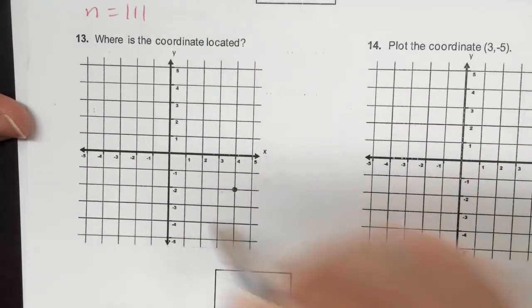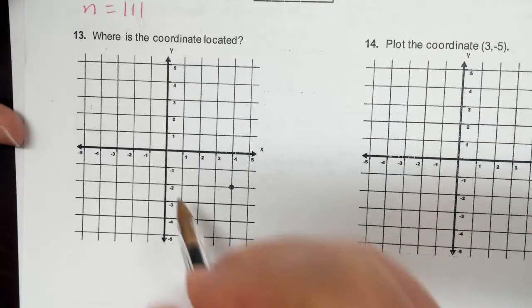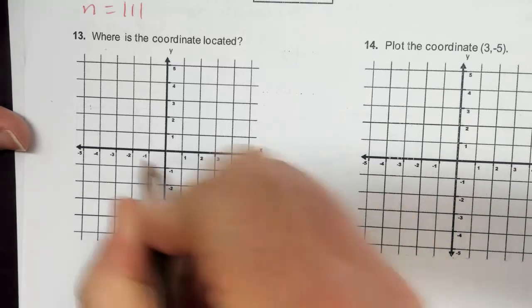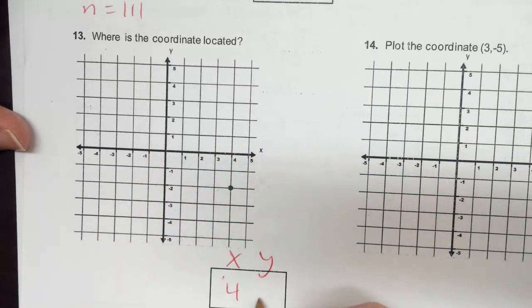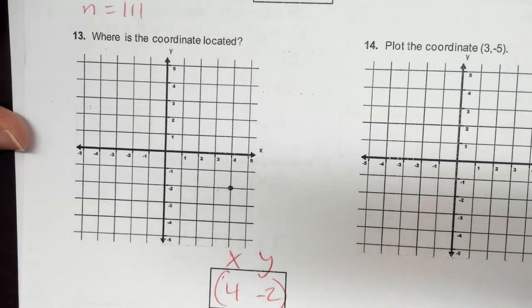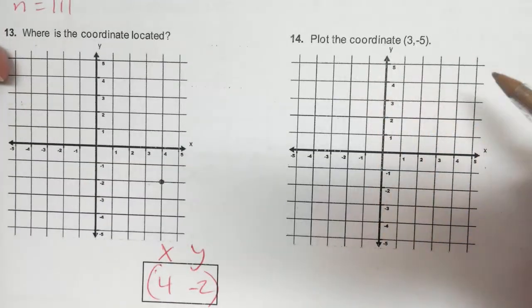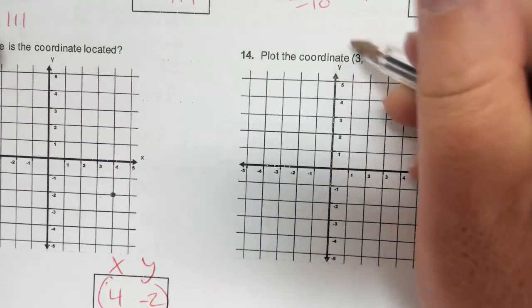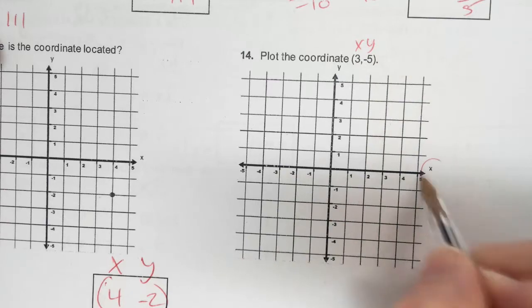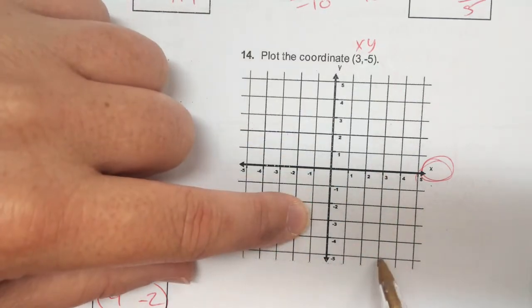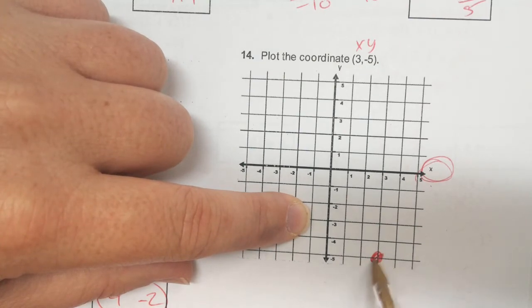And the last two problems. What coordinate is this? That is (4, negative 2) — it's the x, y coordinate. I went over 4 and down to negative 2. Then to plot the next one — the x is 3 and y is negative 5, so along the x-axis go over to 3, and on the y-axis go down to negative 5. And that's my final answer.